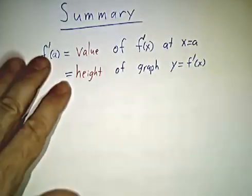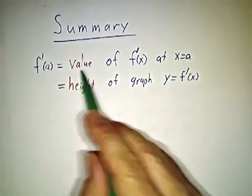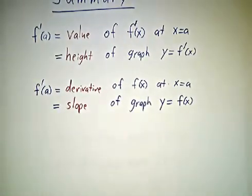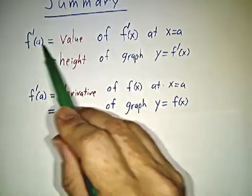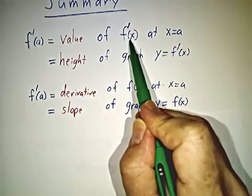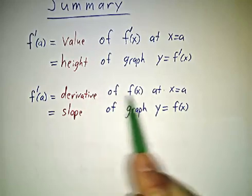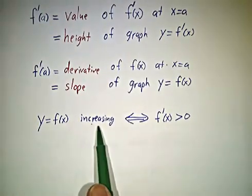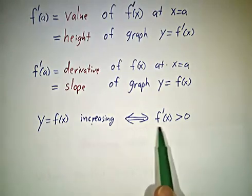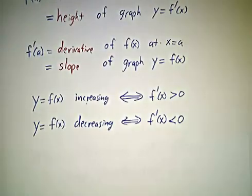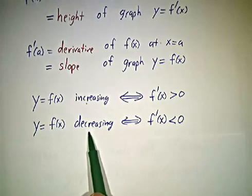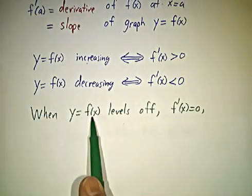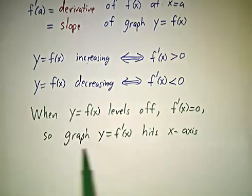So here's our summary. When you draw the graph of f', the value of f' at a given point is the height of that graph — but it's not the height of the original graph, it's the slope of the original graph. So f'(A) is the value of f' at A, which is the slope of the original graph at A. Whenever the original graph is increasing — heading uphill — the slope is positive, which means the derivative is positive. Whenever the original function is decreasing — heading downhill — the derivative is negative. Whenever the original function levels off, the derivative is 0; that's where the graph of f' hits the x-axis.